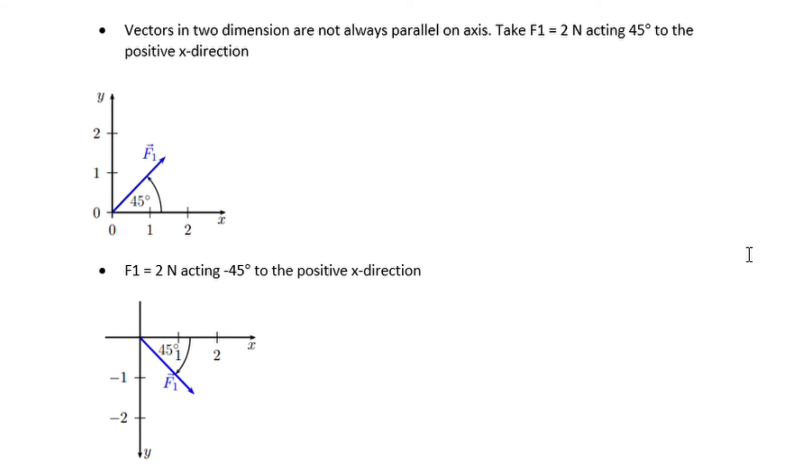Vectors in two dimensions are not always parallel or perpendicular to each other. Take for example F1 which is 2 newtons acting 45 degrees to the positive x direction. The angle can be easily achieved using a protractor. Similarly, if the force was acting on the negative 45 degrees still to the positive x direction, it will be on the opposite side of the x.